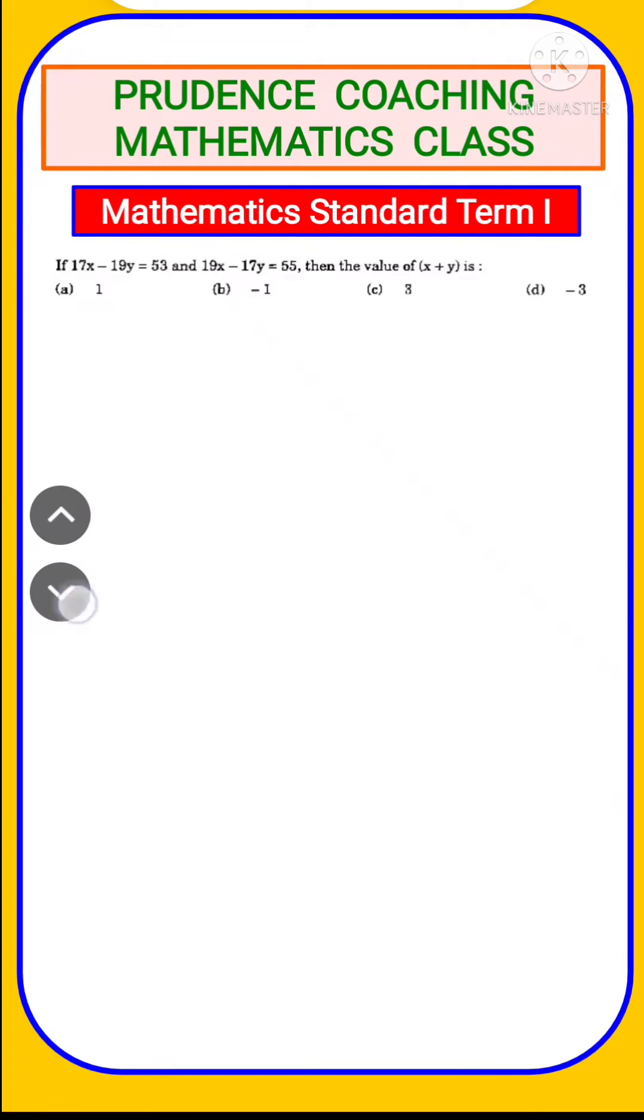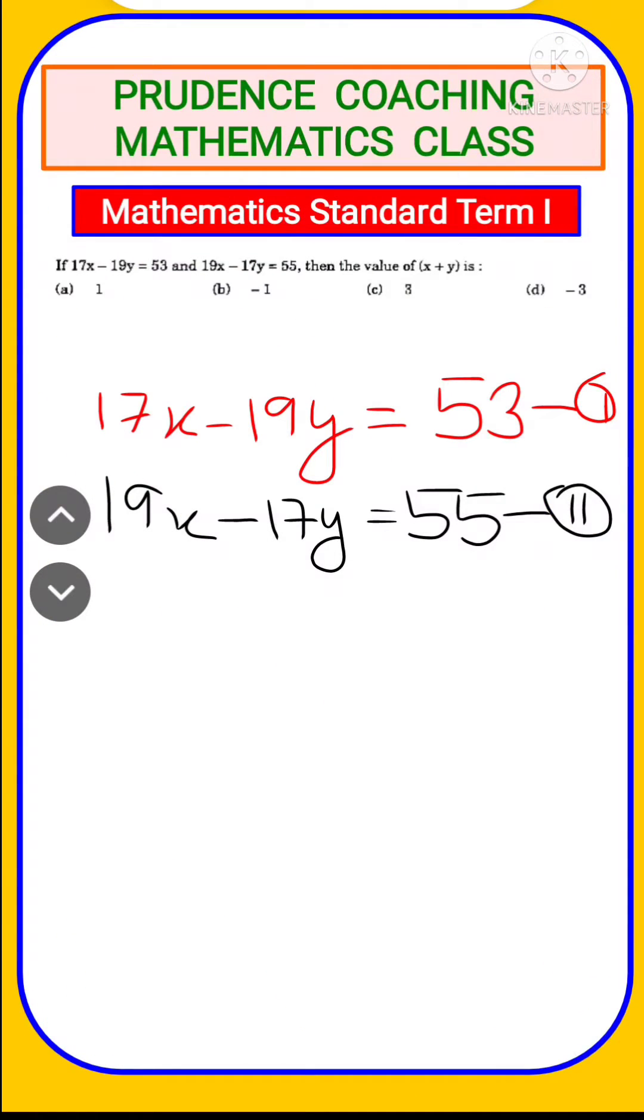Let's start with problem number 35. In equation 1, we have 17x - 19y = 53, and equation 2 is 19x - 17y = 55. You are asked to find the value of x + y.